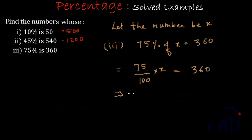So from here the value of x will be equal to 360 multiplied by 100 divided by 75. What I have done? I have transpositioned this fraction and taken it to the right hand side.